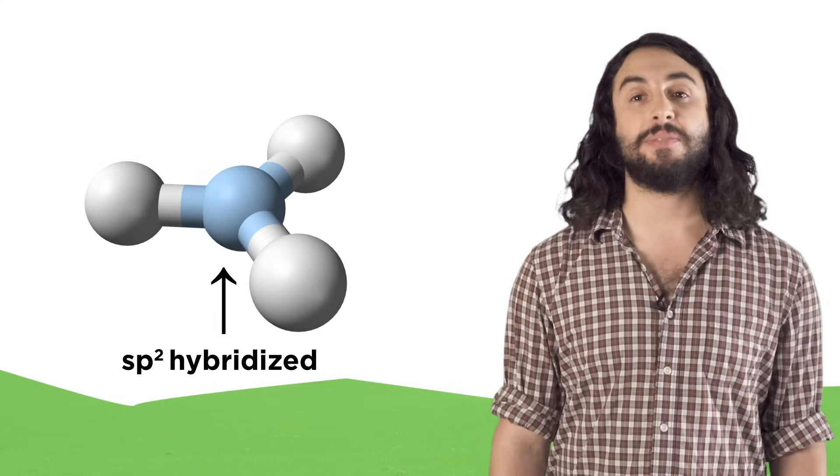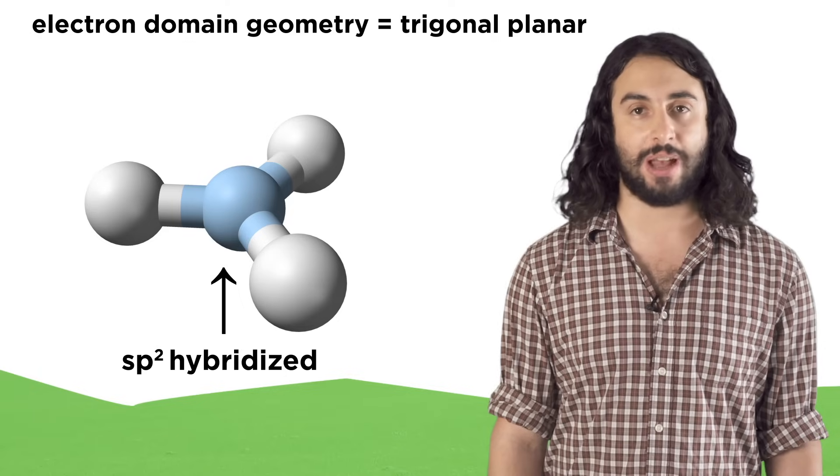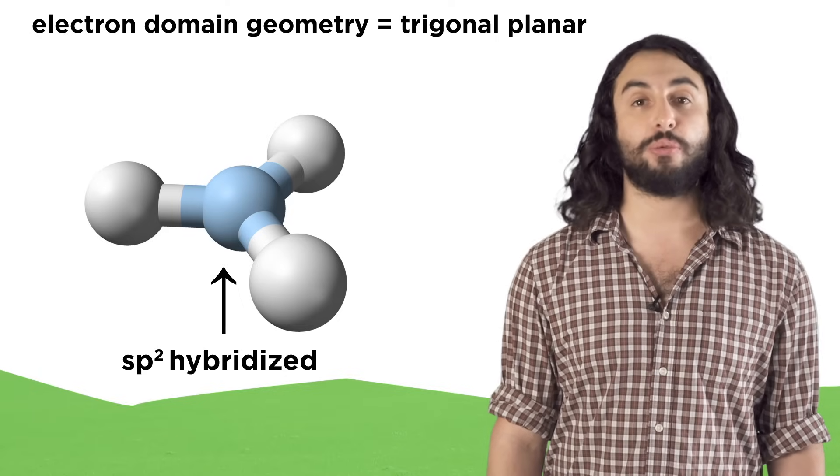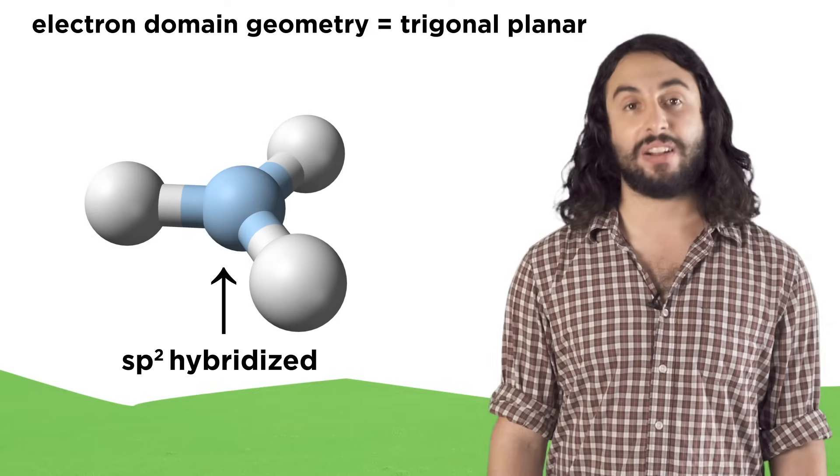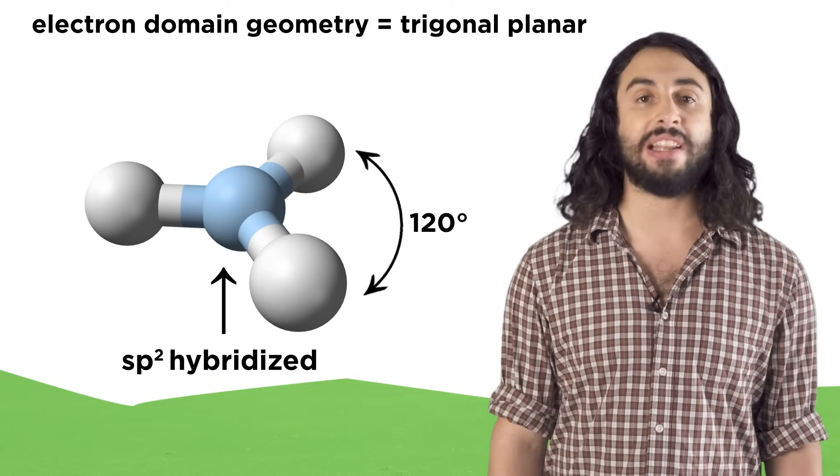Anything that is sp2 hybridized will exhibit trigonal planar electron domain geometry. This is the furthest the three fluorines can be from each other while connected to the boron. Trigonal planar molecules have 120 degree bond angles.